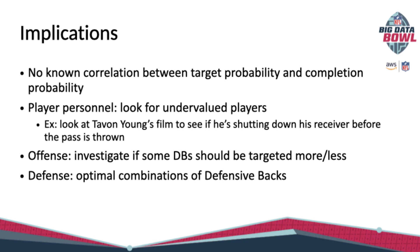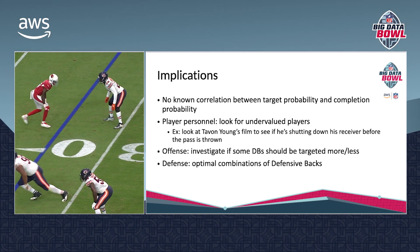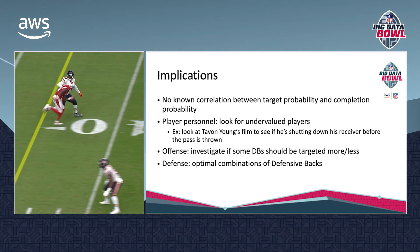On the player personnel side, this can be a really beneficial way to look for undervalued players — for example, in the Tayvon Young case, you can look at his film to see if he's shutting down his receiver before the pass is thrown. From the offensive side, this can be used to investigate if some defensive backs should be targeted more or less. And from the defensive side, you can create optimal combinations of defensive backs, like I showed in the Chicago Bears case.